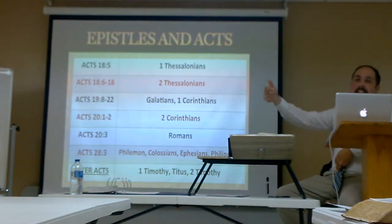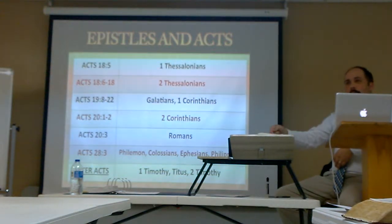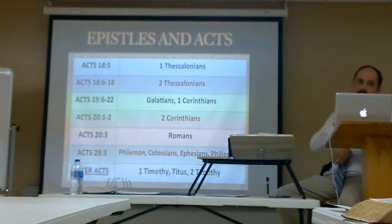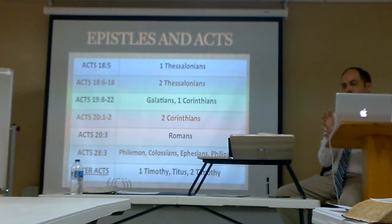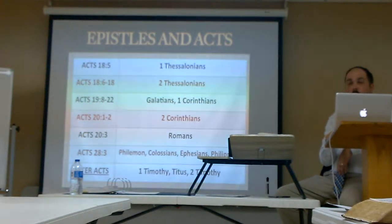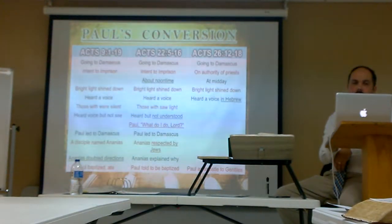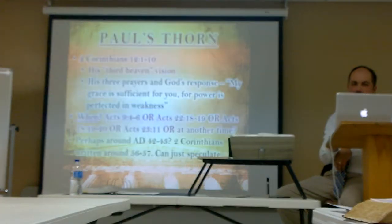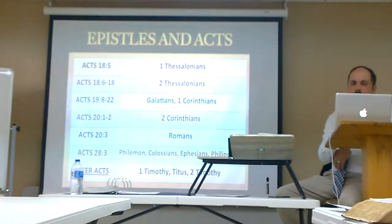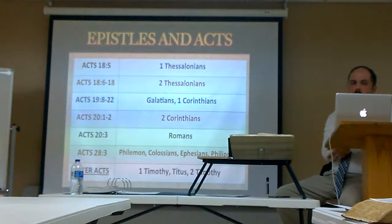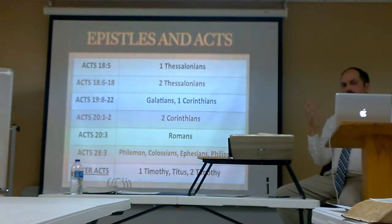Nero was killed in 68. So if Nero kills Paul and Peter, it has to be before 68. Most people, based on some evidences, have suggested that Paul dies in 64 and Peter somewhere in 65 or 66. So there are questions about how all of that fits together chronologically.